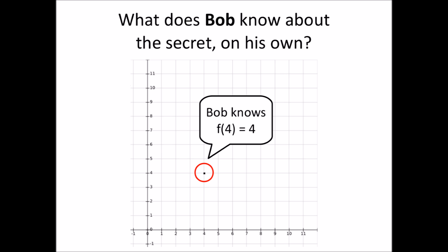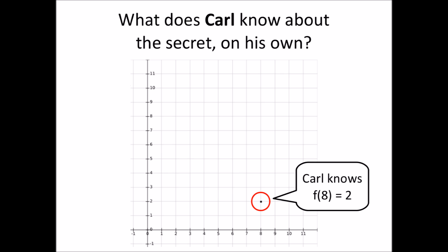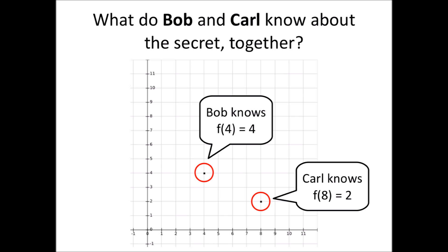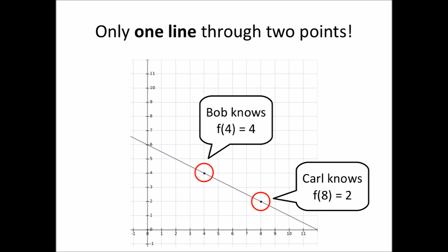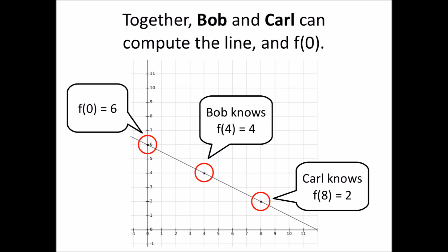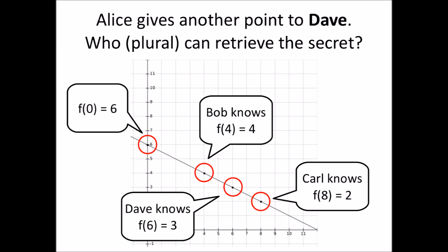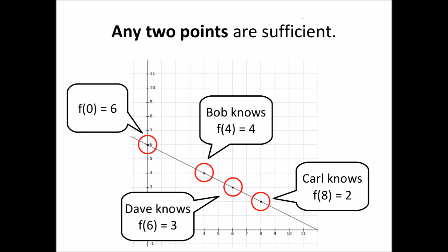Since Bob only has one point, there is an infinite number of possible lines that go through this point, and therefore there is also an infinite number of possible values for f of 0, the secret. Similarly, for Carl on his own, any value of the secret is possible. Only when Bob and Carl combine their shares of the secret function can they reconstruct the function, since there is only one line that passes through both points. Therefore, together they can find the value of the secret at f of 0. And note that if Alice distributes more shares — for example, she gives another point to Dave — any two of these shares are sufficient to retrieve the secret value, because any two points determine the secret line that Alice used to share the secret.